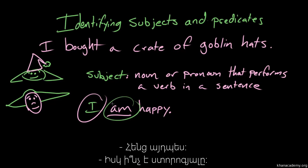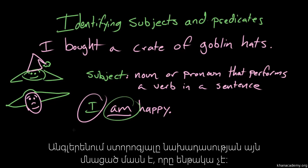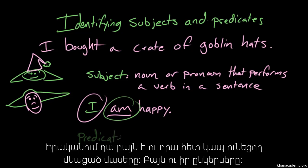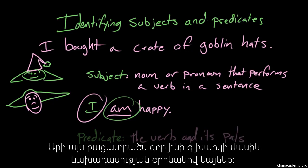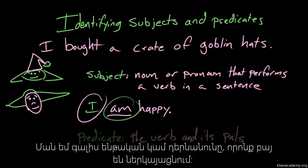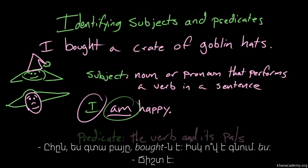What is a predicate? So a predicate is kind of all of the rest of the sentence that isn't the subject. What it really is is the verb and all of the parts that are related to the verb. Yeah, verb and its pals — that's good. So let's apply that approach to the goblin hat sentence.